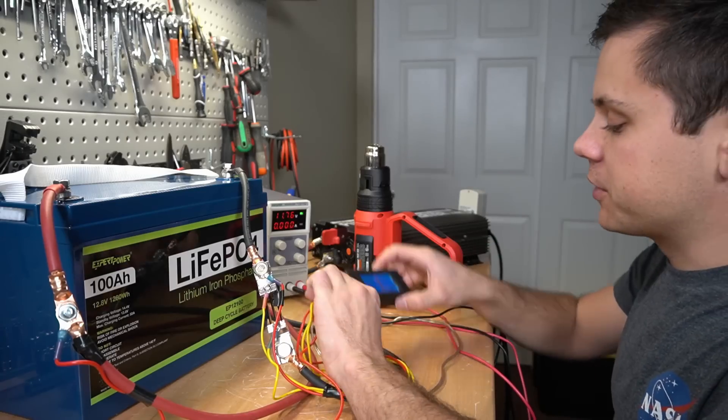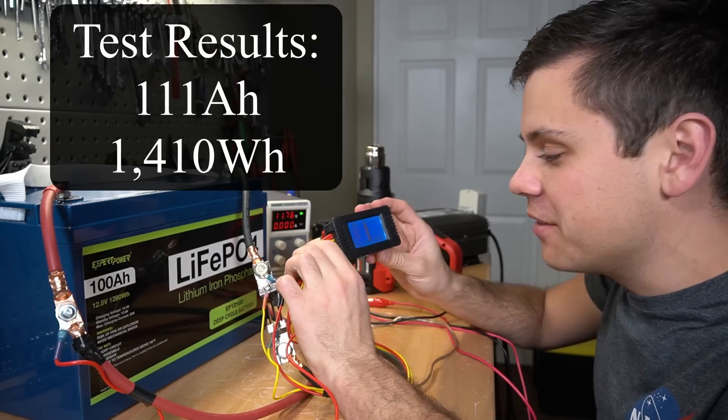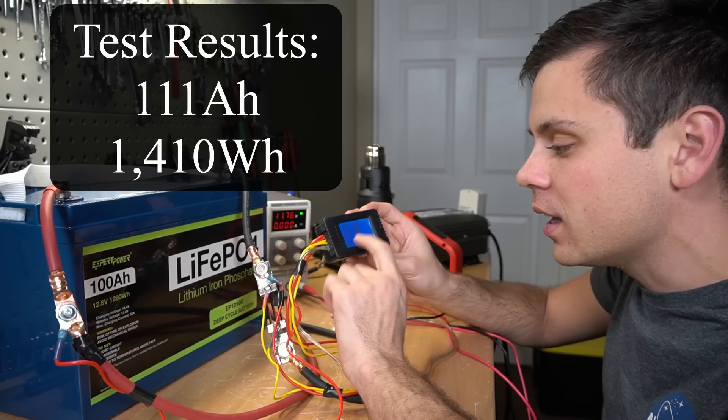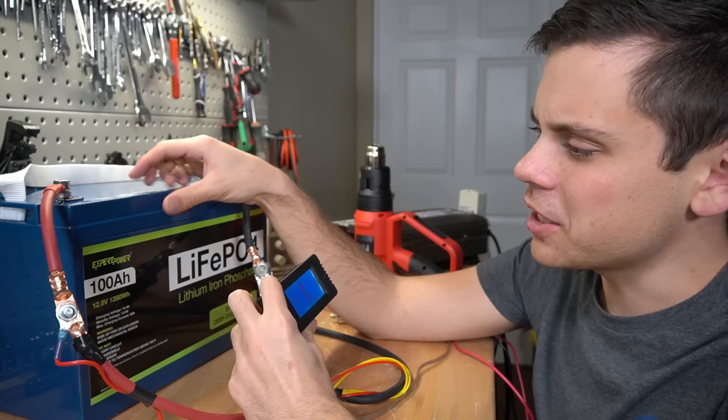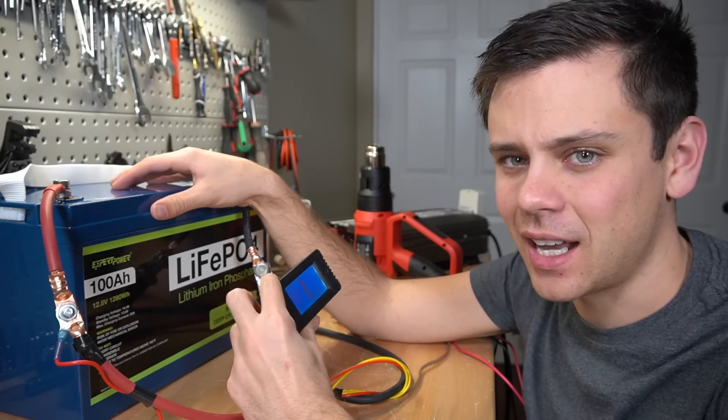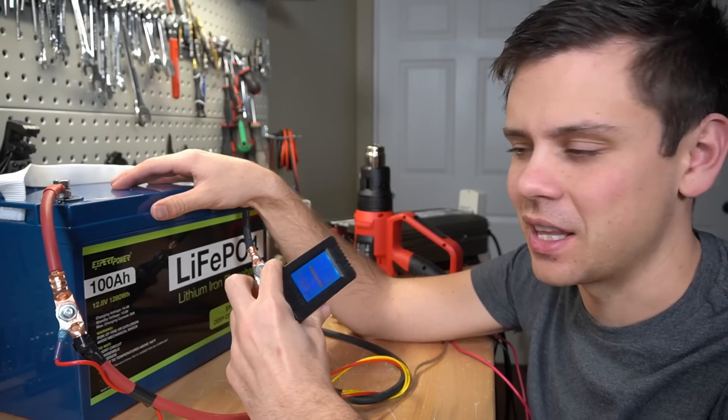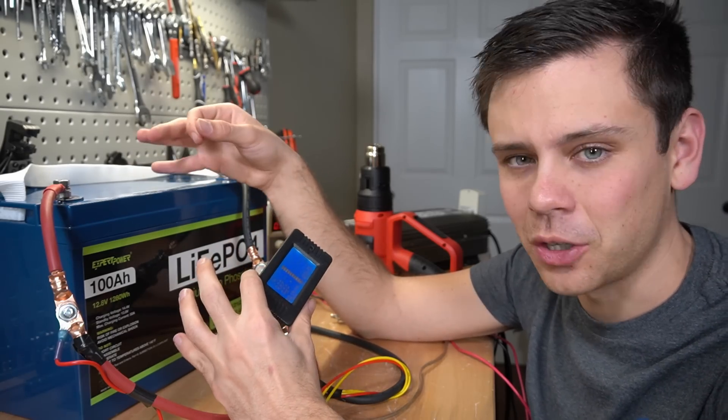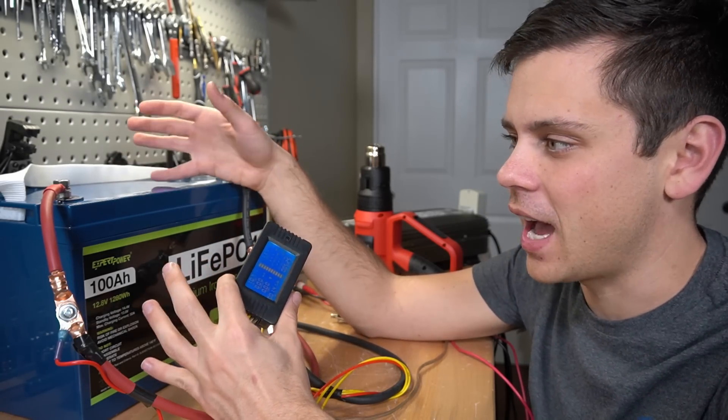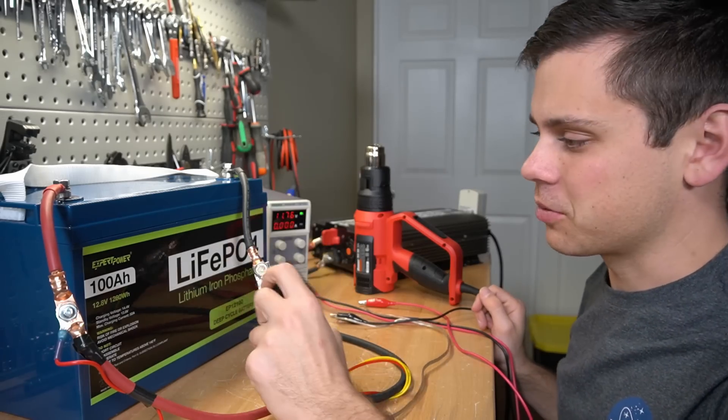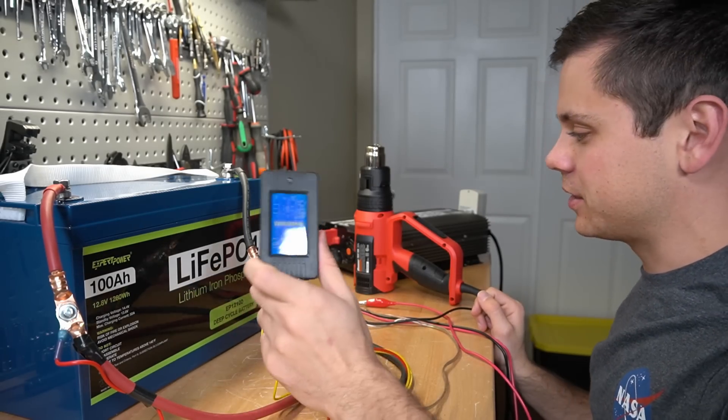We have some test results. We have 111 amp hours and 1.41 kilowatt hours. This battery exceeded its advertised capacity by 11%. This is the best test result for capacity that I've ever had. I really was not expecting this result from this cheap of a battery. That is nuts.